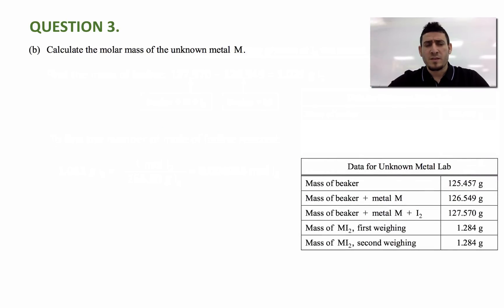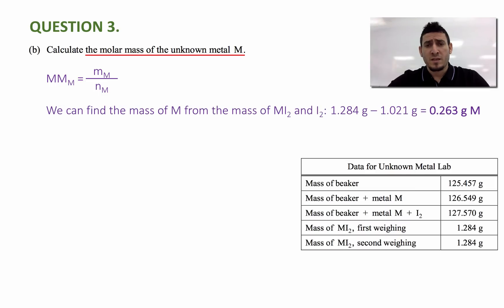Next question says, calculate the molar mass of the unknown metal M. To find the molar mass of the metal M, I need to find the mass and divide it by the number of mole.